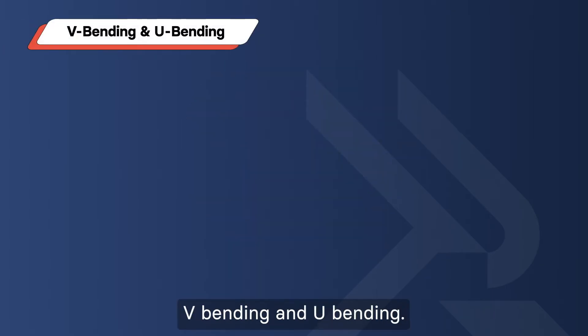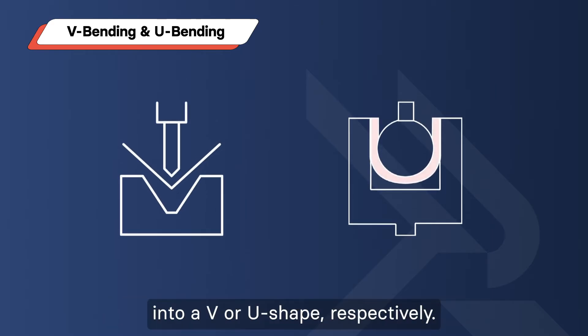V-bending and U-bending. These are the classics as the metal is bent into a V or U shape, respectively. These methods are versatile and commonly used for various applications.